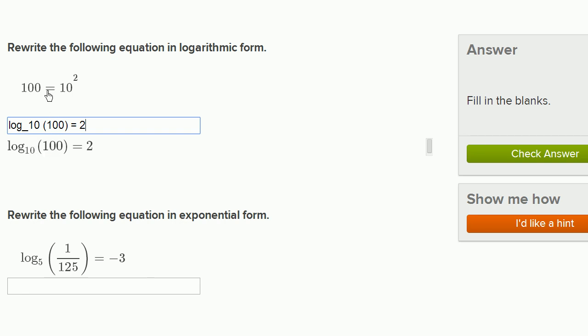Notice these are equivalent statements. This is exponential form. This is logarithmic form. This is saying the power I need to raise 10 to to get to 100 is equal to 2, which is the same thing as saying that 10 to the second power is 100. The way that I specified the base is by doing this underscore right over here. So underscore 10, log base 10 of 100 equals 2.